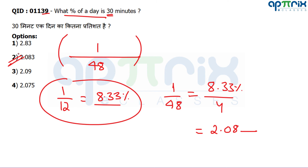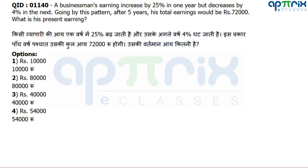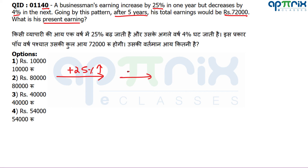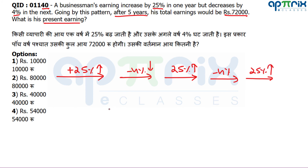Question number 40: A businessman's earnings increase by 25% in one year but decrease by 4% in the next. Going by this pattern, after 5 years his total earning will be rupees 72,000. What is his present earning? The 5-year story: increase 25%, decrease 4%, increase 25%, decrease 4%, then increase 25% once more.